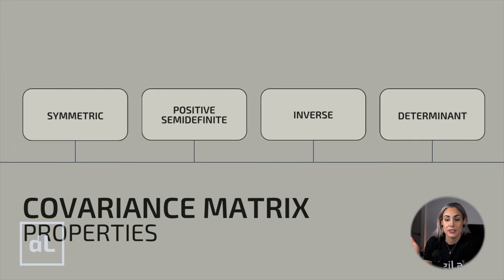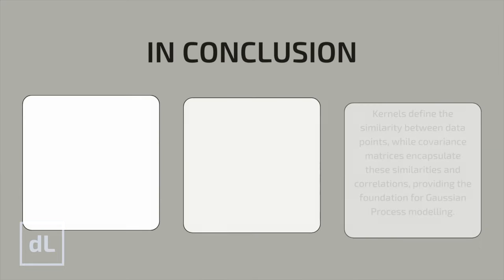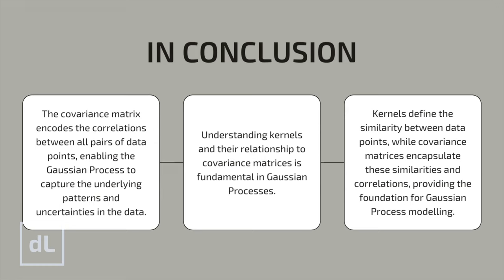The determinant of the covariance matrix gives us an idea of how spread out the data points are — a bigger determinant means the data is more spread out, while a smaller determinant means the data is more clustered together. The covariance matrix encodes correlations between all pairs of data points, enabling the Gaussian process to capture underlying patterns and uncertainties. Understanding kernels and their relationship to covariance matrices is fundamental: kernels define similarity between data points, while covariance matrices encapsulate those similarities and correlations.